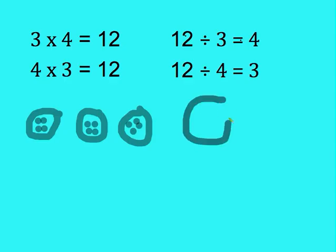So again, I can start by visualizing my three groups. Here's group one, here's group two, and here's group three. Now I want to take those twelve and I want to share them equally into those three groups.